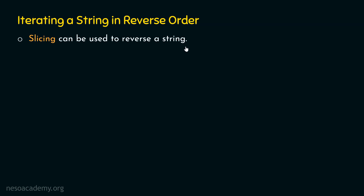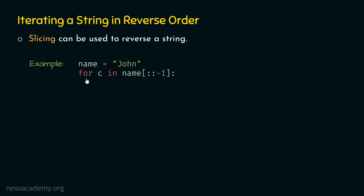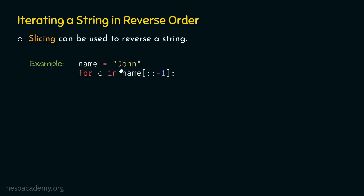Let's understand how to access each character of a string in reverse order using for loop with a simple example. Let's say the name of some person is John, and this time we want to access these characters in reverse order — meaning we want to access N first, then H, then O, and then J. For this purpose, we need this for statement: 'for c in name[::−1]'. Here, we are omitting the first and second parameter because we want to access all the characters. The third parameter is the step value, which is minus one, meaning the string will be accessed in reverse order. Eventually at run time, this will be replaced by the string with characters N, H, O, J, and each character will be received by variable c.